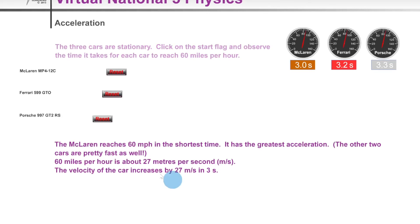So what we could say is that the McLaren reaches 60 miles per hour in the shortest time and it therefore has the greatest acceleration. And for information it says that 60 miles per hour is about 27 meters per second, which is the unit we are familiar with when we talk about speed or velocity.